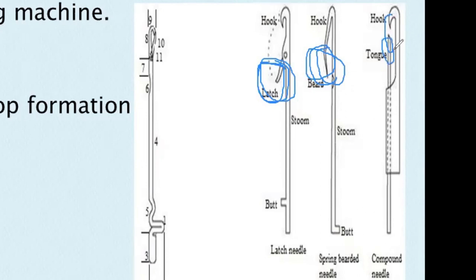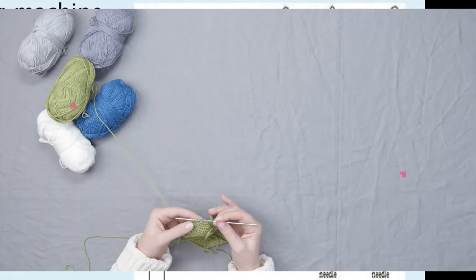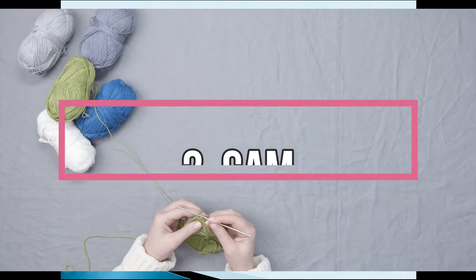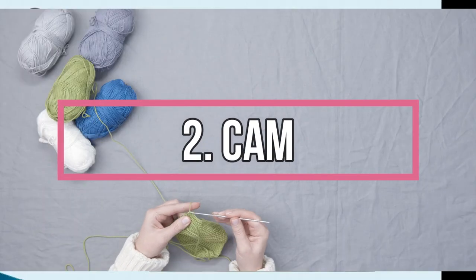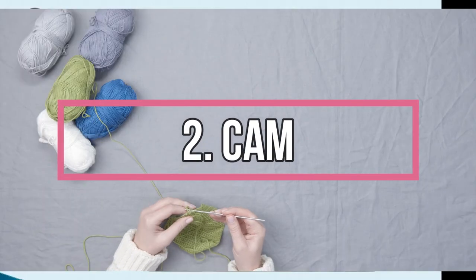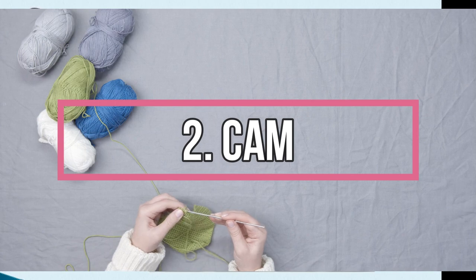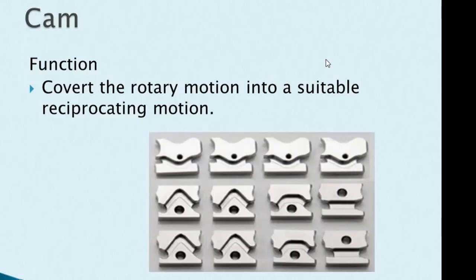The third basic element is the compound needle. The second basic element of knitting is the cam. The cam is a working part of the knitting machine.